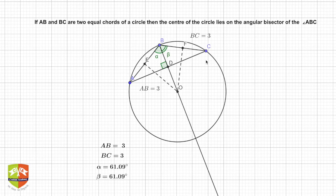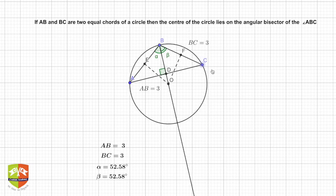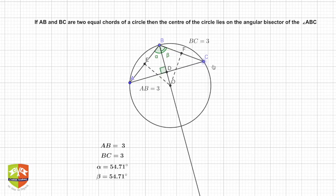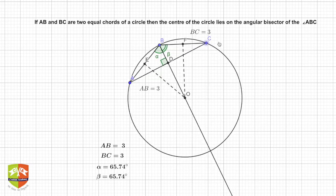If you think this could be because of one particular configuration, so what we can do is we can change the positions of these three points. You can see now as I'm changing the position of C, the angles are varying, but still the center is still on the angle bisector ABC.